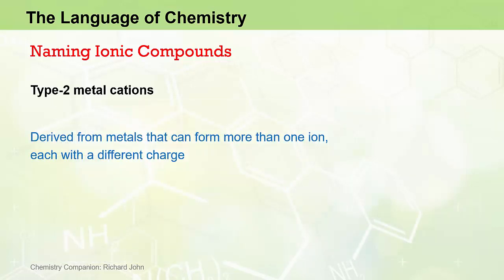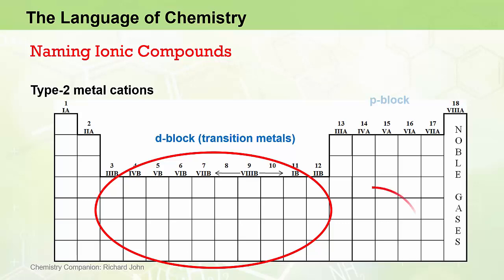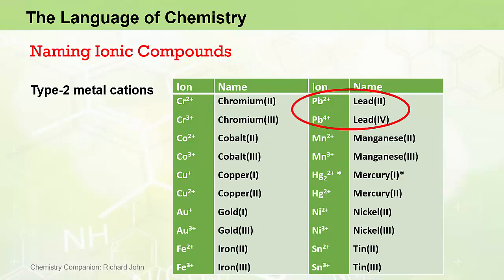Type 2 metal cations are derived from metals that can form more than one stable ion, each with a different charge, which is not the case for type 1 metals. Type 2 ions are typically derived from transition metals in the middle part of the periodic table — the so-called D block — and the lower half of the P block metals. This table shows some of the more common type 2 metal cations. Starting with the Cr2+ and Cr3+ cations: two different cations derived from chromium when it loses 2 or 3 electrons respectively. Because there are two different chromium ions, we name them using the Roman numeral convention — the Cr2+ ion is named chromium 2, and the Cr3+ ion is named chromium 3. Similarly, the Pb2+ ion and the Pb4+ ion are named lead 2 and lead 4 respectively, and so on through the table.